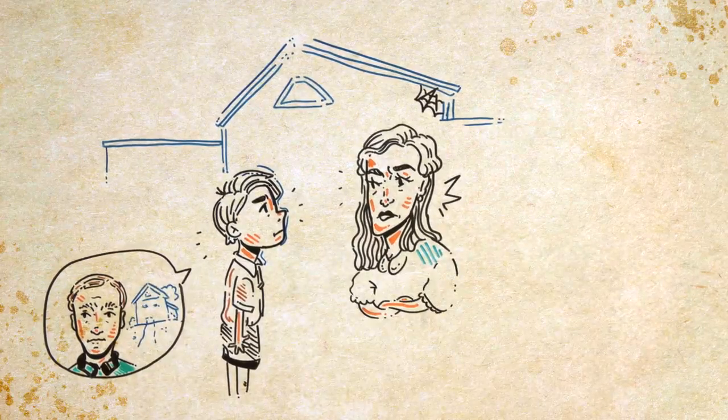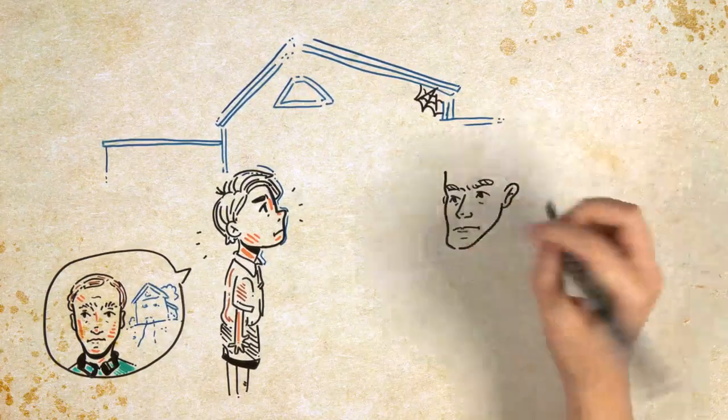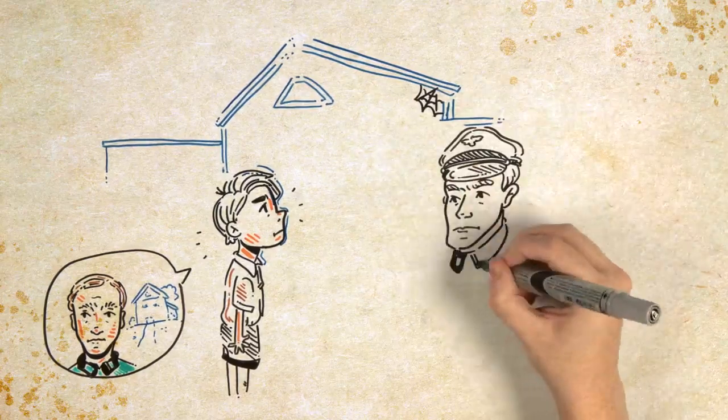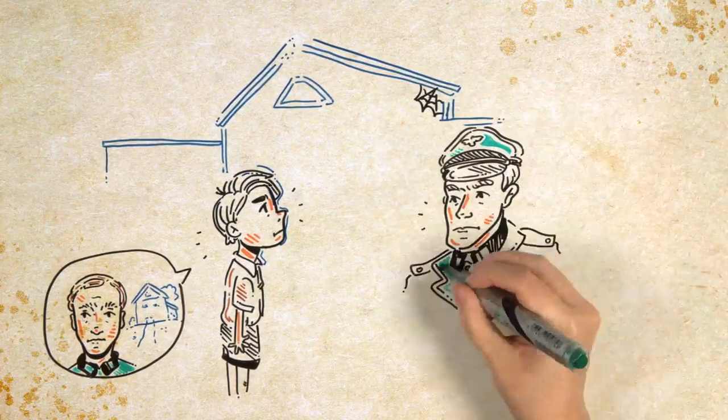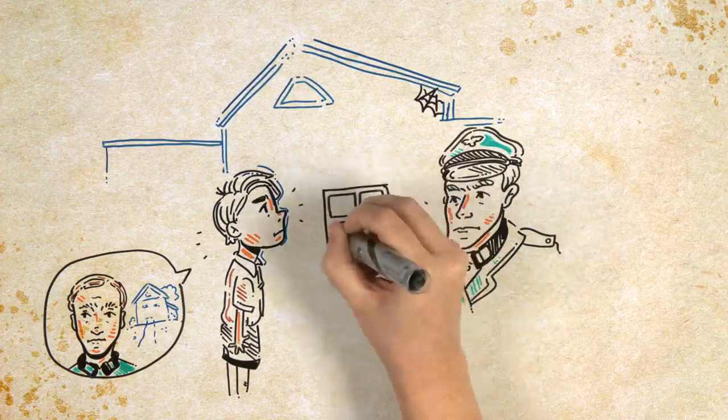Before helping Marie unpack, Lieutenant Kotler appears at their door and Bruno has a bad feeling about him. As he looks out his bedroom window, he sees something chilling.